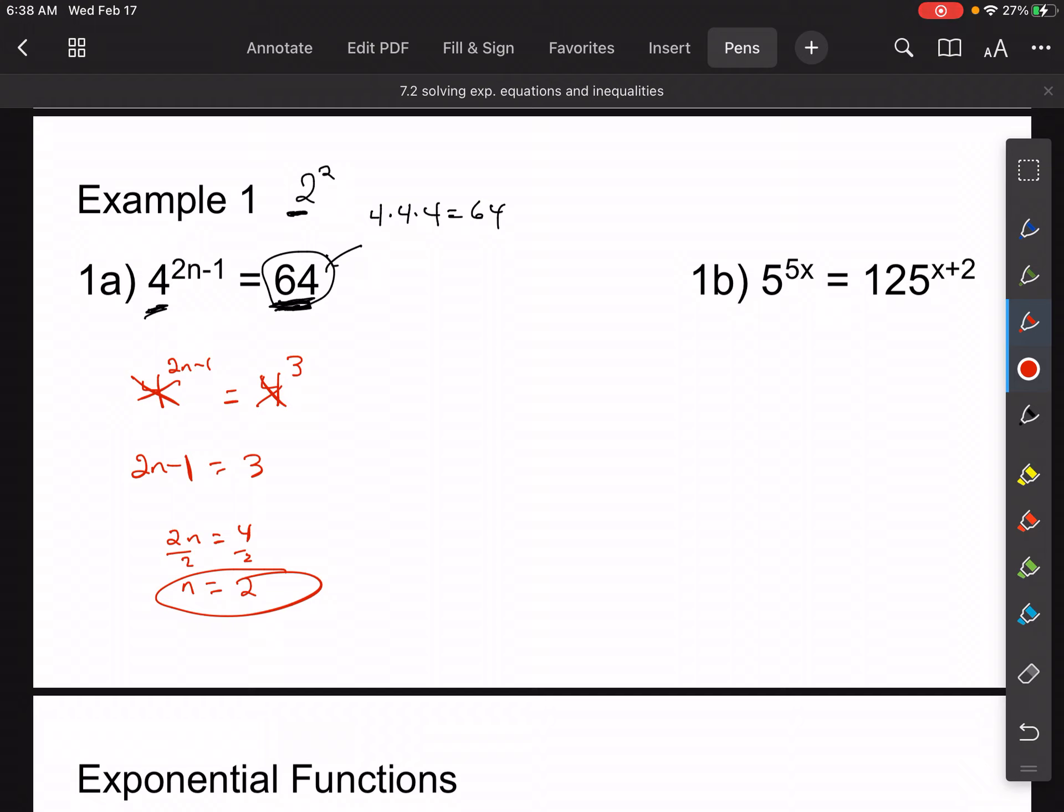And it would be a good idea to plug it back in and check it, especially on a test. So if you plugged it back in there, you would get 4 to the third. 4 to the third is equal to 64, so we know we did it right. So for 1b, I would like you guys to try this one out on your own.